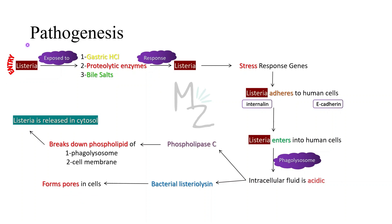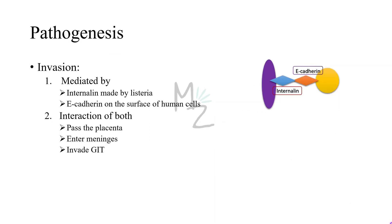Let's talk about pathogenesis in detail. Listeria will enter the human body and appear in the colon, where it is exposed to gastric HCl, proteolytic enzymes, and bile salts. In response, the stress response genes of Listeria cause it to adhere to human cells. Listeria has internalin, which adheres it to human cells that have E-cadherin on their surface. Invasion of cells is mediated by internalin made by Listeria interacting with E-cadherin on the surface of human cells, causing Listeria to enter into the human cells.